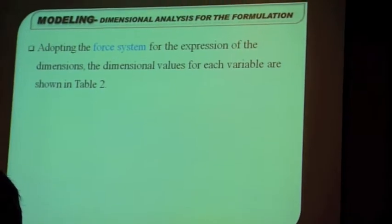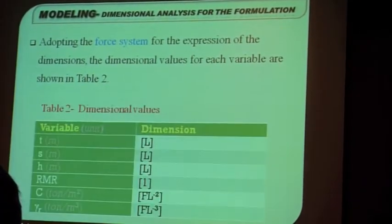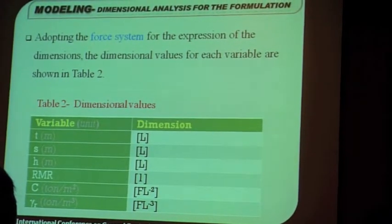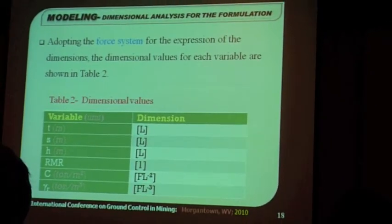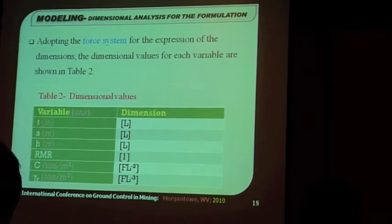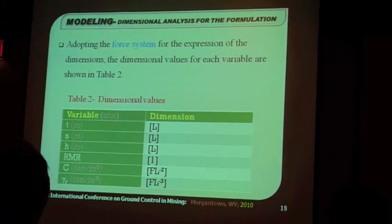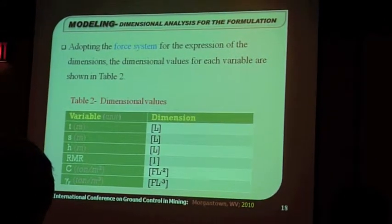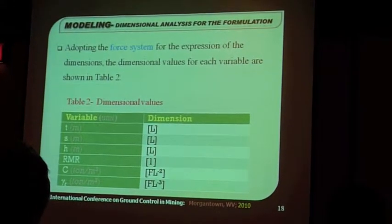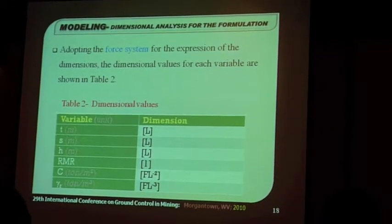Adopting the force system, as we said before, for the expression of the dimension. The dimensional values for each variable are shown in this table. T, delta meter for length, therefore, S, H, the whole length L, RMR dimensionless, and C, F L to the power minus 2, etc. These are the dimensions of our variables.